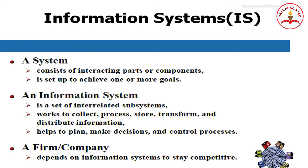An information system (IS) consists of interacting parts or components set up to achieve one or more goals. It is a set of interrelated subsystems that work to collect, process, store, transform, and distribute information. It helps to plan, make decisions, and control processes. A firm depends on information systems to stay competitive.